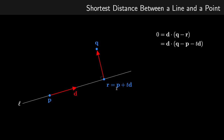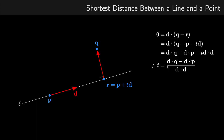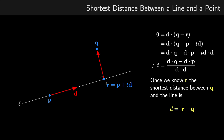R is given by the equation P plus TD. Substituting P plus TD in place of R, I rearrange to make T the subject. The dot product is distributive, so I expand the brackets and rearrange for T. We get a fraction: on the numerator, D dot Q minus D dot P, divided by D dot D. The dot product returns a scalar, so this is one scalar divided by another, giving us T. Then we calculate R using R equals P plus TD, and the shortest distance from Q to the line is the magnitude of the vector R minus Q.